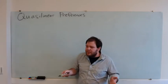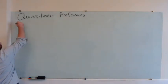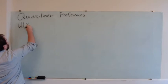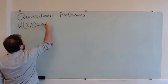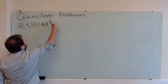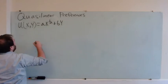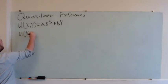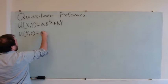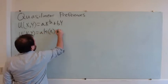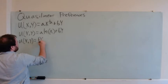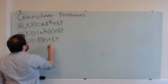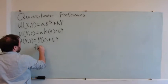Quasi-linear preferences is a term that describes all sorts of different utility functions that look something like this: u of x and y equals a times x to the one-half plus b times y, or a times the natural log of x plus b times y, or more generally, just some function of x plus b times y, where f of x is concave.